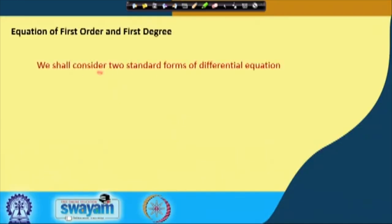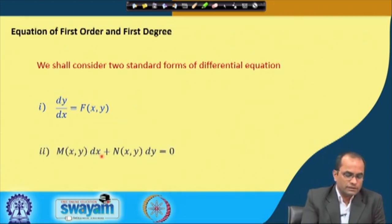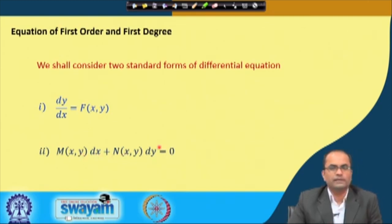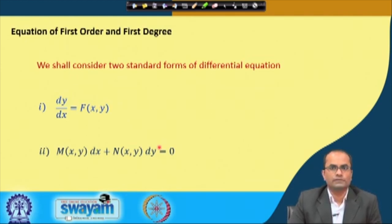Today we will focus on these two standard forms. The first one is dy/dx = f(x,y), where the function of x and y is on the right hand side. The other form we will be discussing in this lecture is M(x,y)dx + N(x,y)dy = 0. These are the two types of first order differential equations we will be covering in this and the next few lectures.